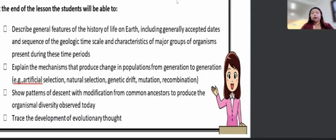And then we will be observing how the different modifications from the different ancestors affect the current or the living organisms nowadays. And lastly, is to trace the development of evolutionary thought. So we will be tracing the history of evolution, starting from the different personalities, scientists, together with their different ideas. With that, without further ado, let's begin our discussion.